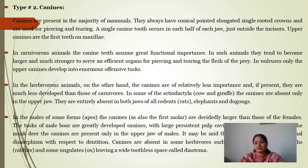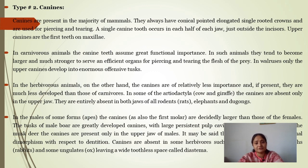In herbivore animals, canines are relatively less important and, if present, are much less developed than those of carnivores. The canines are not developed or absent. Some artiodactyls like cow and giraffe have canines absent only in the upper jaw. Canines are entirely absent in all rodents — rat, elephant, dugong, and aquatic mammals. In their places, there is a space known as diastema.